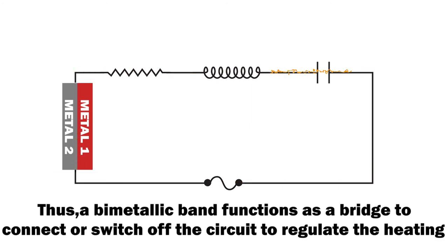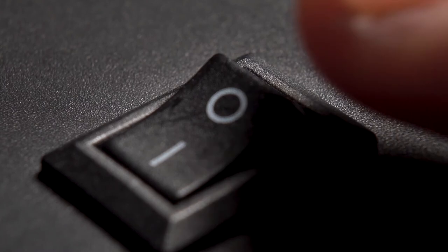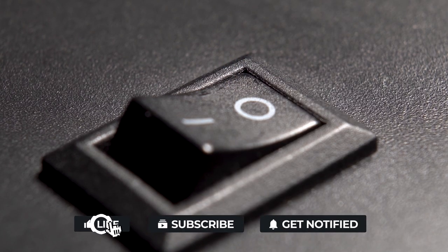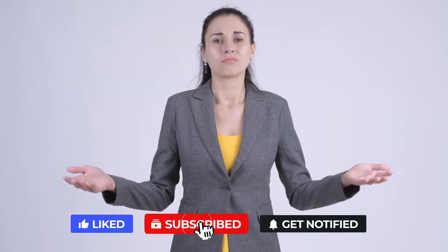Thus, a bimetallic band functions as a bridge to connect or switch off the circuit to regulate the heating. This cyclical switching is why the iron seems to turn on and off repeatedly during the ironing process. While this may be irritating at times, it certainly helps to keep us safe.